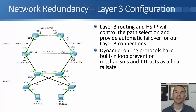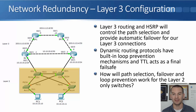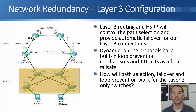So that's how things work at Layer 3. In the next lecture, we'll start looking at how path selection, failover, and loop prevention will work for our Layer 2 only switches in our network example.